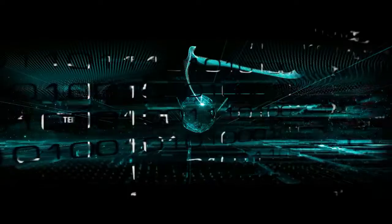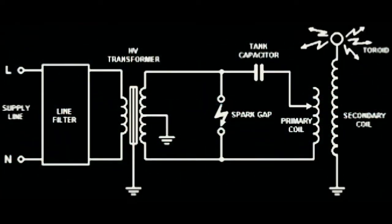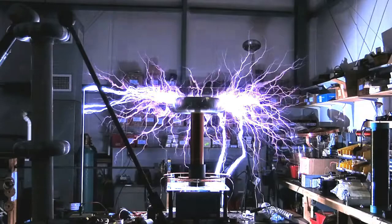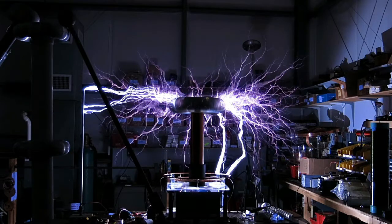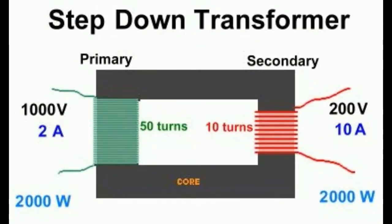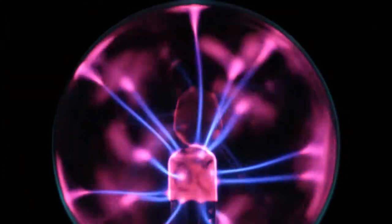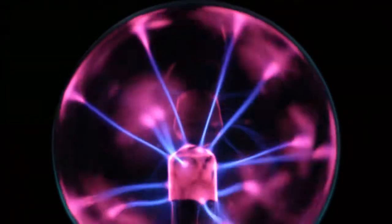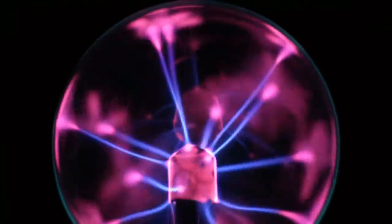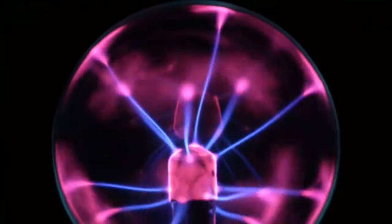An alternating current is set up in the primary coil. The alternating current in the primary coil is transferred to the secondary coil — this is the same thing that happens in transformers. After a few cycles, all of the power is transferred into the secondary coil. The property of resonance is fundamental to the operation of Tesla coils.